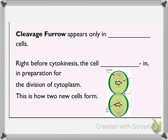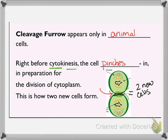Next we have cleavage furrow. Cleavage furrow is also part of a way to identify a cell — in this version it would be an animal cell. Cleavage furrow appears only in animal cells, and right before cytokinesis the cell pinches in, in preparation for this division of cytoplasm. It's going to divide when the cell pinches in and pulls the two cells apart, so two new cells form when that divides completely.